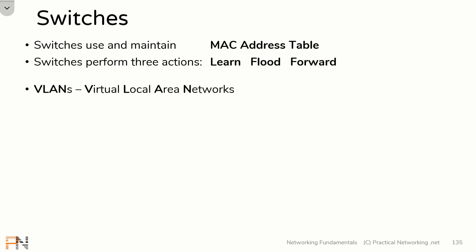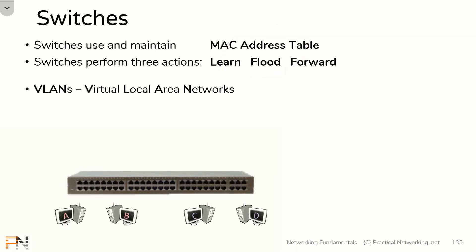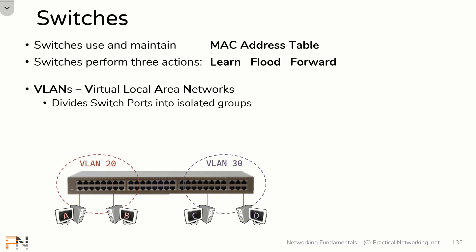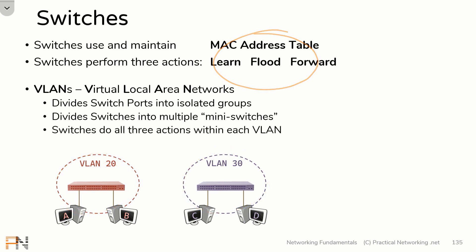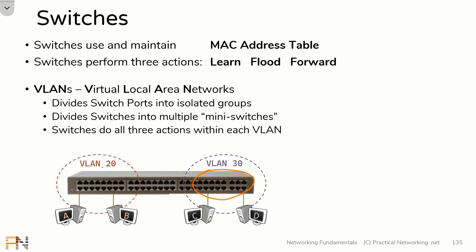VLANs stand for Virtual Local Area Networks. We're going to briefly define VLANs as needed to discuss switch actions. What VLANs allow you to do is take a switch and divide the switch ports into isolated independent groups. You can group ports into one isolated group called VLAN 20 and other ports into another isolated group called VLAN 30. The switch then essentially acts as multiple mini switches, each performing the three actions independently. The switch maintains one MAC address table for VLAN 20 and another for VLAN 30, confining all three actions to these isolated independent groups.